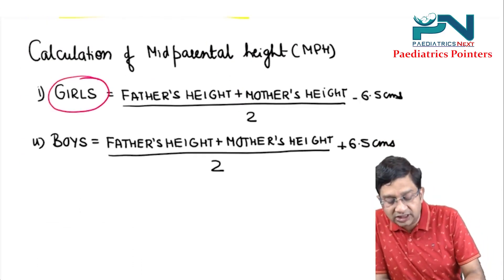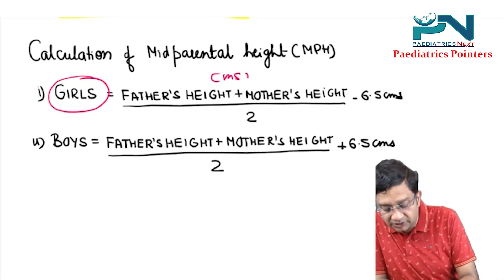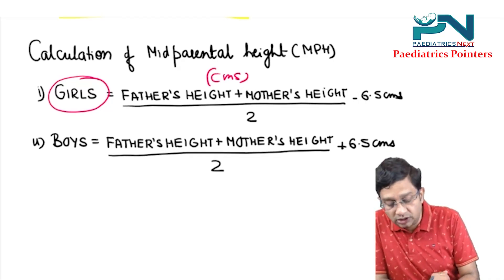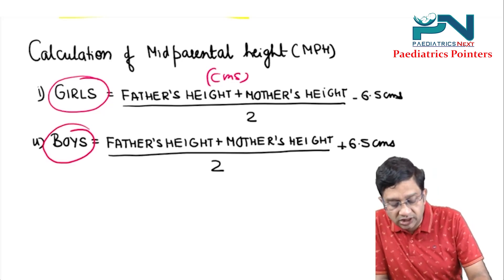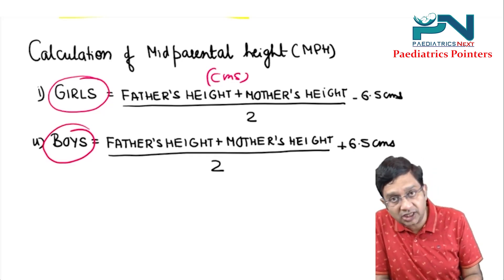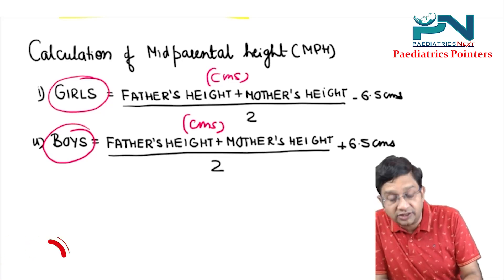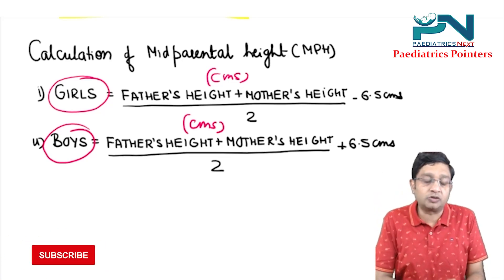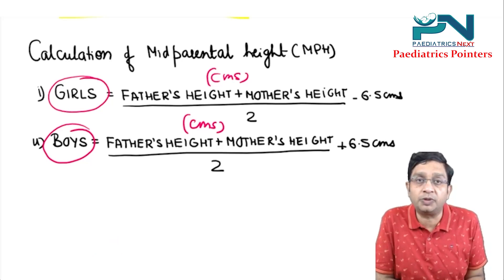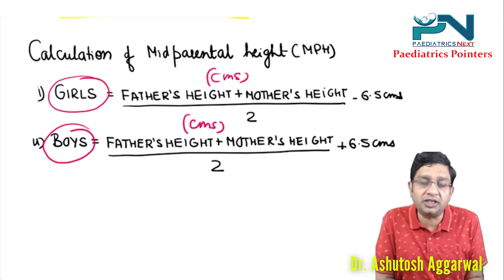For the calculation of mid-parental height: in girls, the formula is (father's height + mother's height in cm) ÷ 2 − 6.5 cm. In boys, it is (father's height + mother's height in cm) ÷ 2 + 6.5 cm. This concludes the brief revision of the topic of short stature. If you are enjoying the series, please like, comment, and subscribe to the channel.